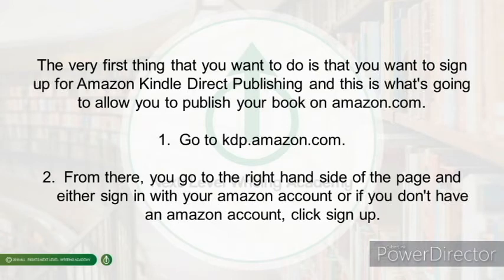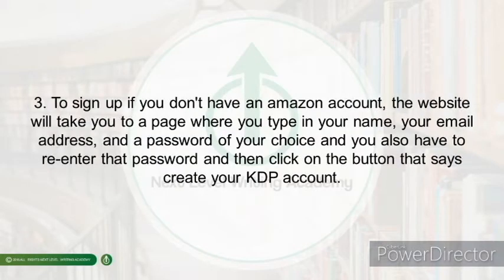The very first thing that you want to do is sign up for Amazon Kindle Direct Publishing, which is what is going to allow you to publish your book on Amazon.com. Go to kdp.amazon.com, then go to the right-hand side of the page and either sign in with your Amazon account, or if you don't have an Amazon account, click sign up.